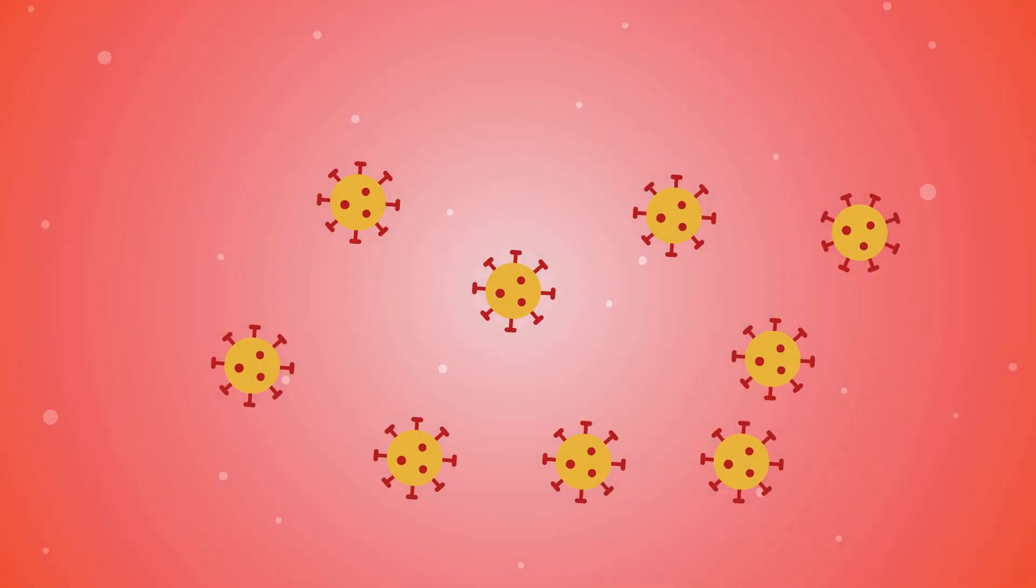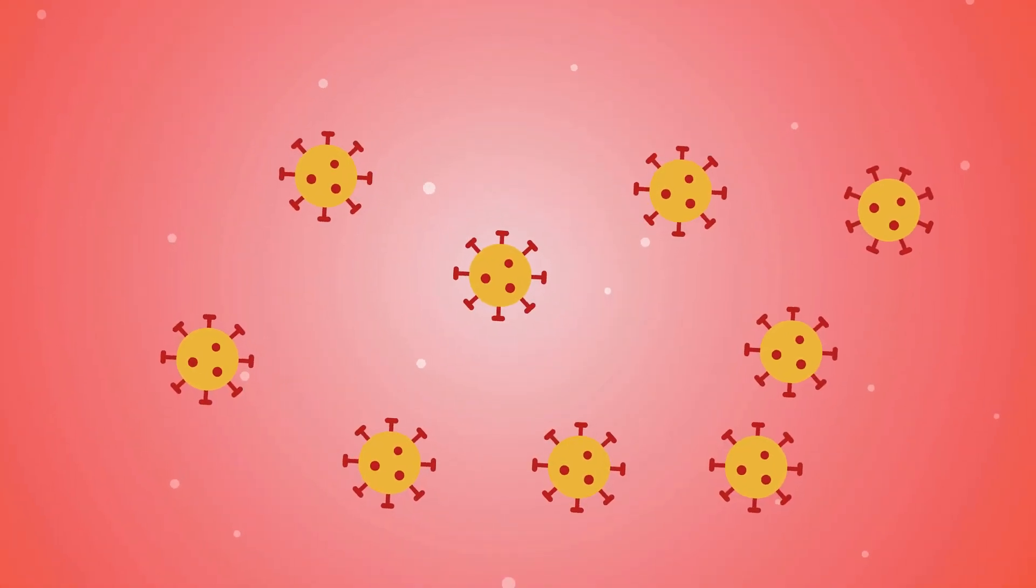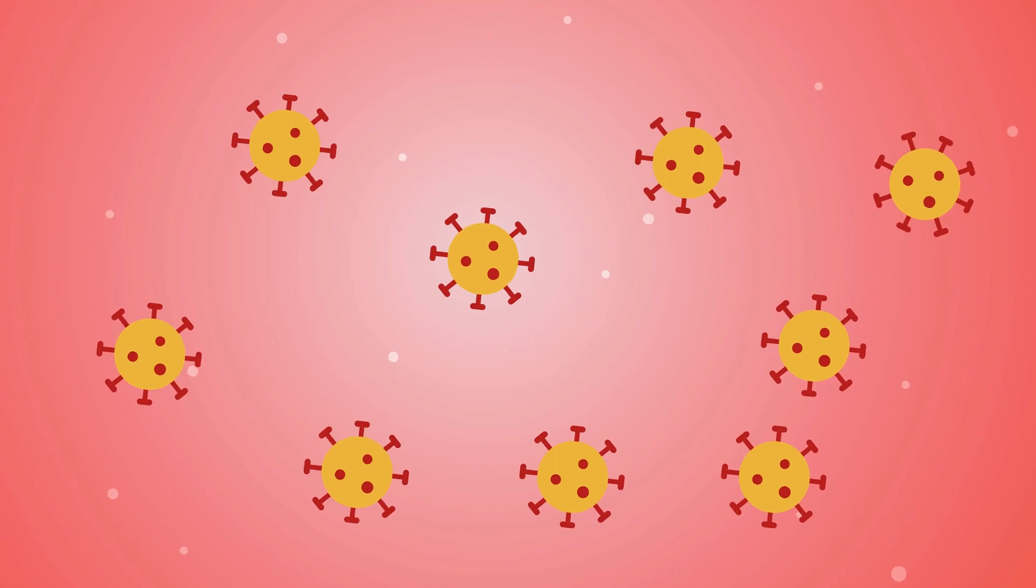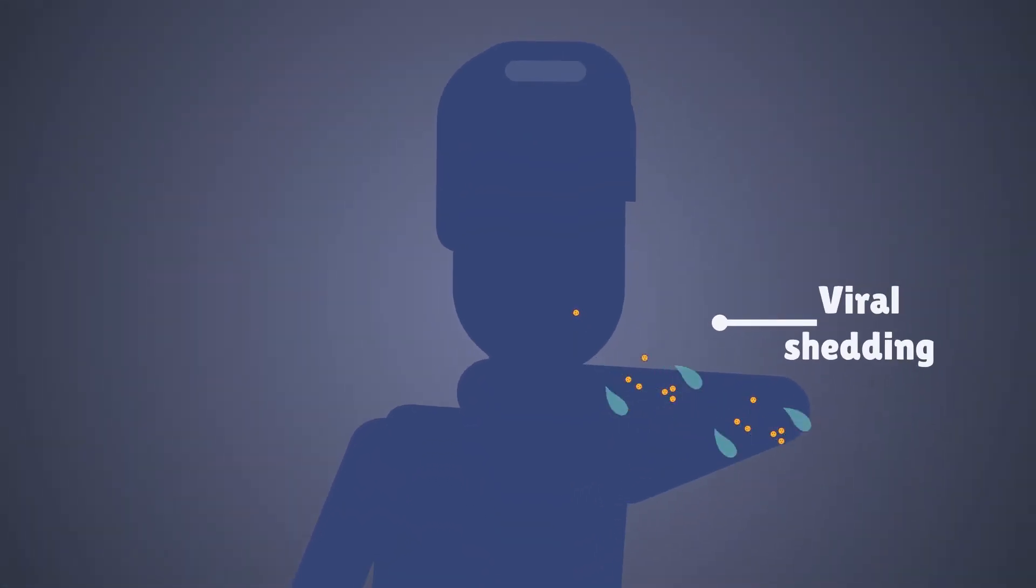COVID-19 has an unusually high level of viral particles in the upper respiratory tract, especially in the nose and mouth, and viral shedding is when those particles escape into the environment. And this is how we believe the virus is currently spreading so rapidly.